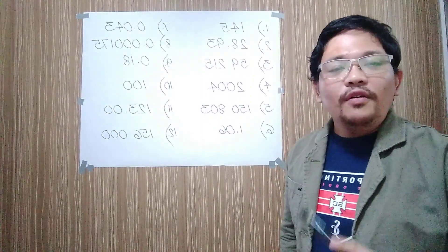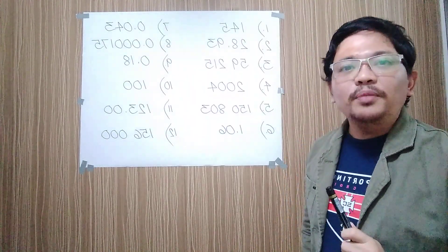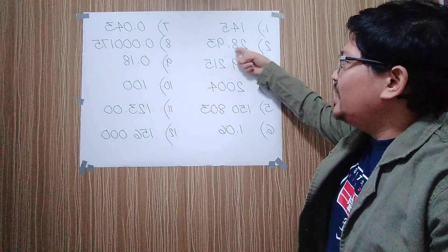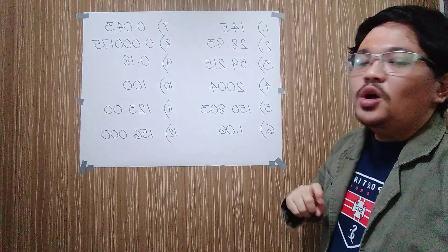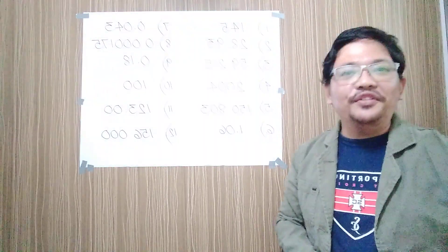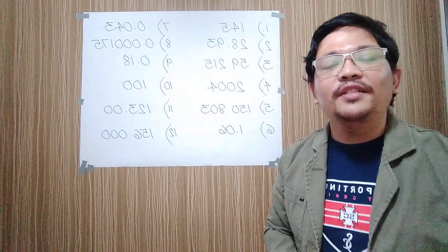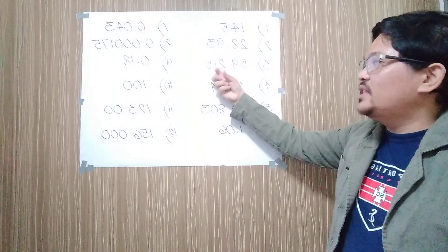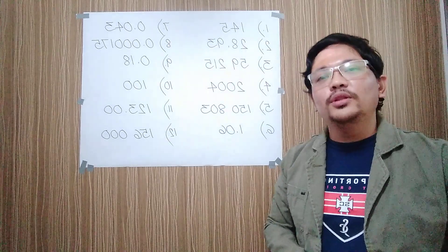For the second example, we have 28.93. In 28.93, there are four significant figures, because two is significant, eight is significant, nine is significant, and three is significant. Moving on to example number three, we have 59,215. In 59,215, there are five significant figures: five, nine, two, one, and five are all significant. Therefore, there are five significant figures in example number three.